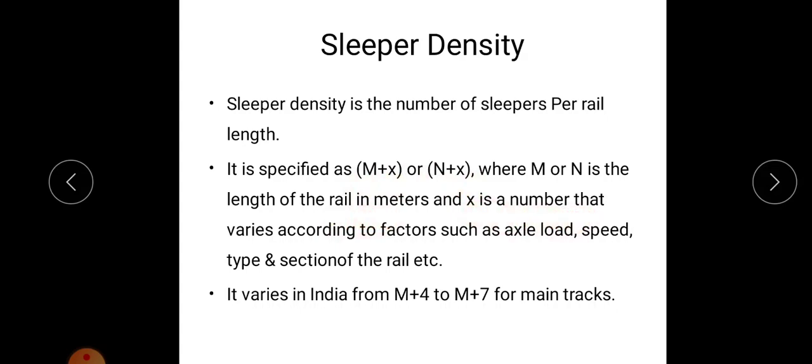And X is the number that varies according to factors such as axle load, speed, type, section of the rail, etc. From country to country it varies based on different factors. Factors like axle load, speed, type and section of rail, etc. X varies.